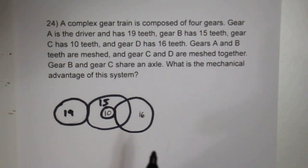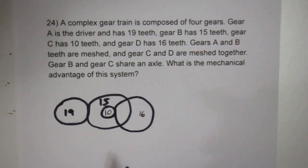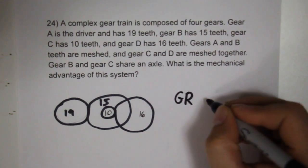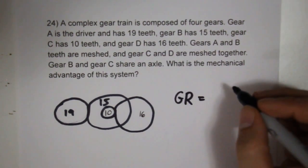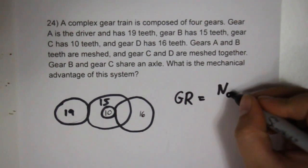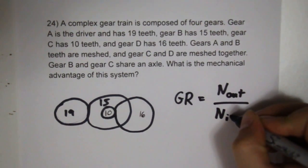Well, one of the important concepts is remembering that we're only talking about gear ratios based on the number of teeth. For a single gear ratio, we're looking at the number of teeth of the output divided by the number of teeth of the input.